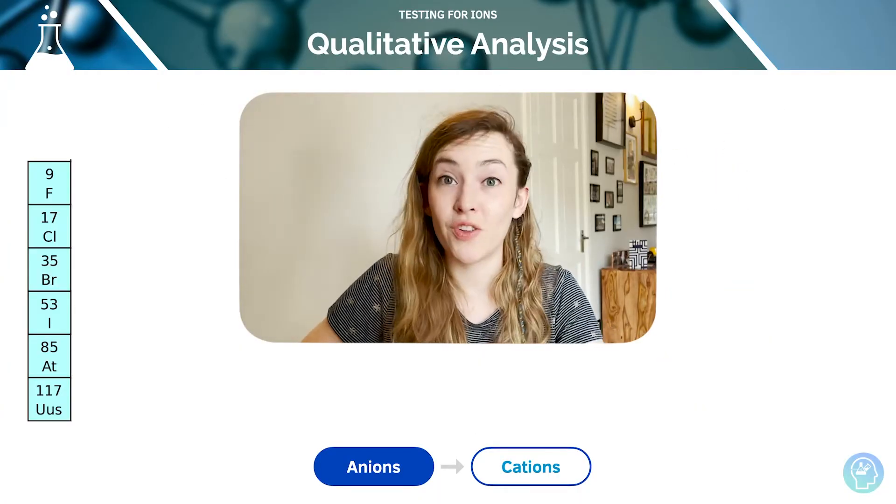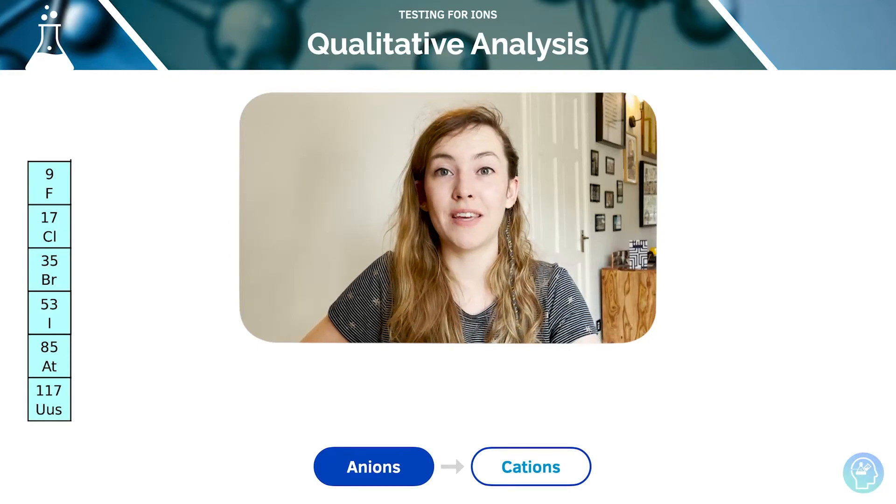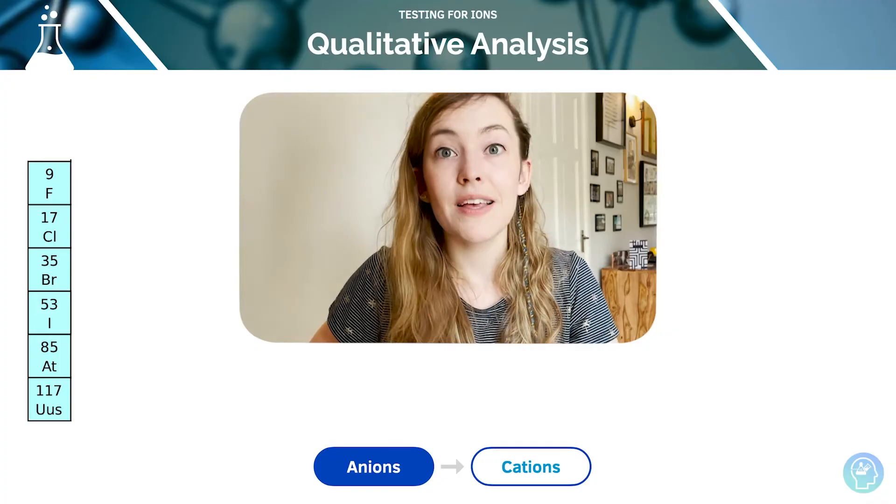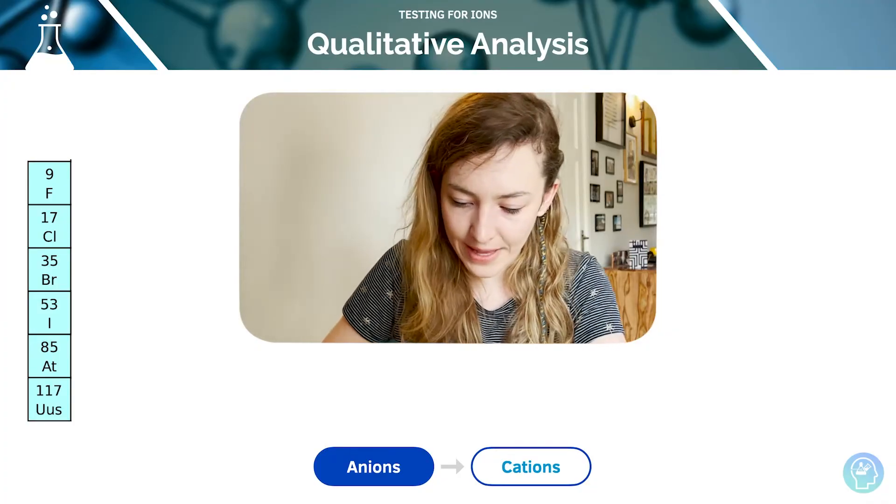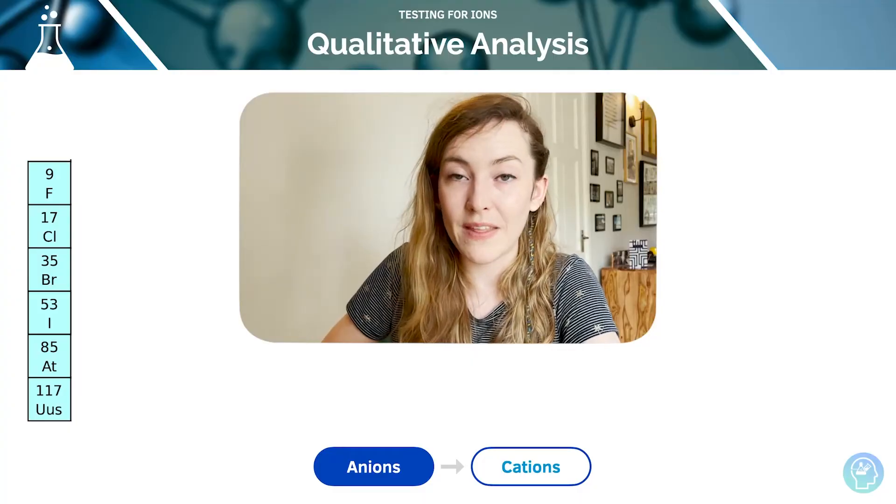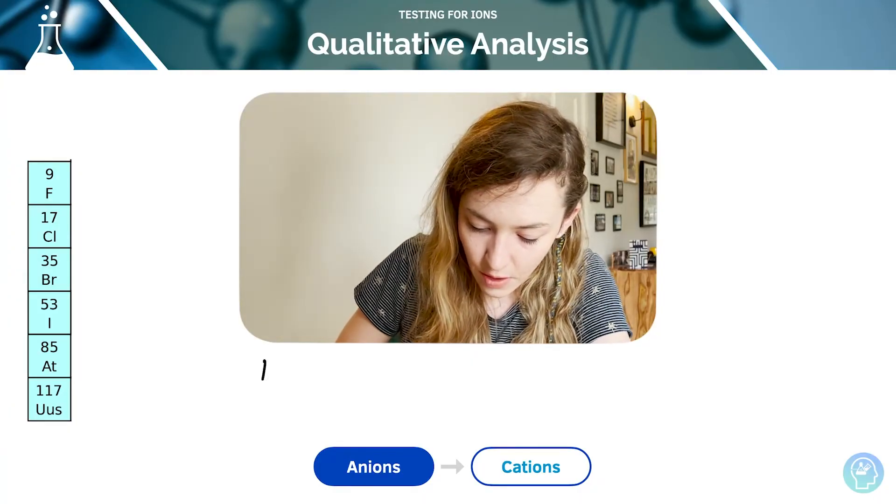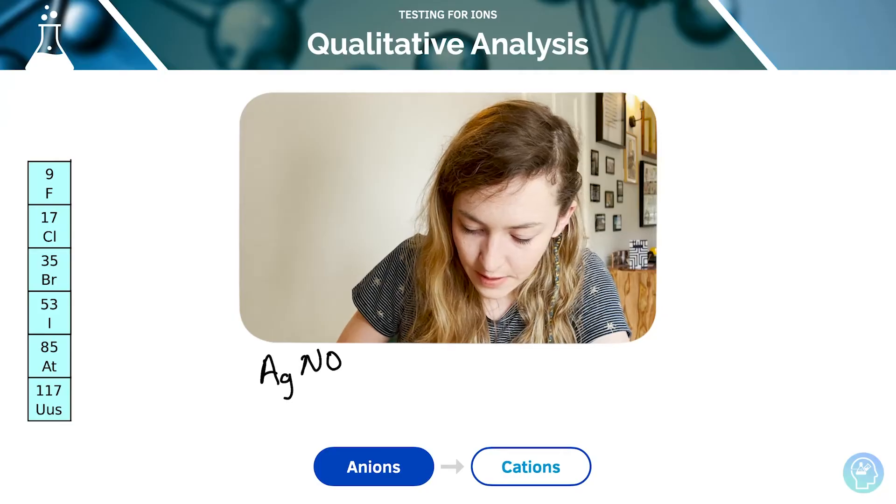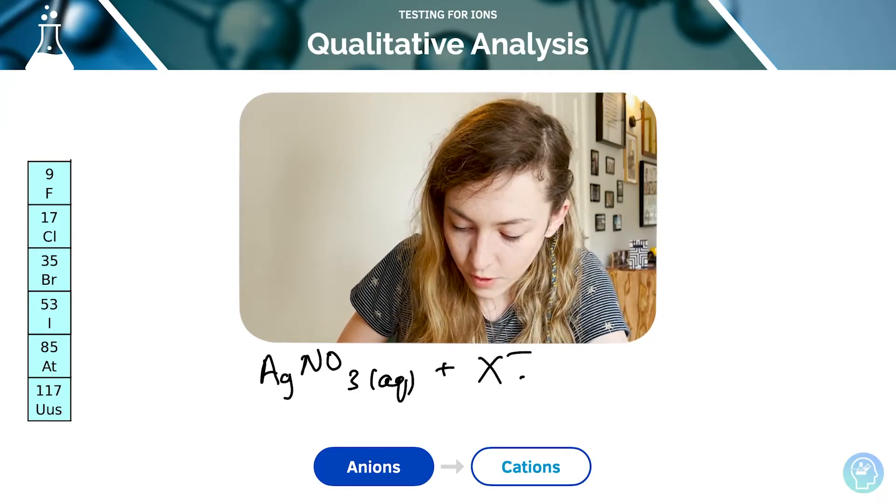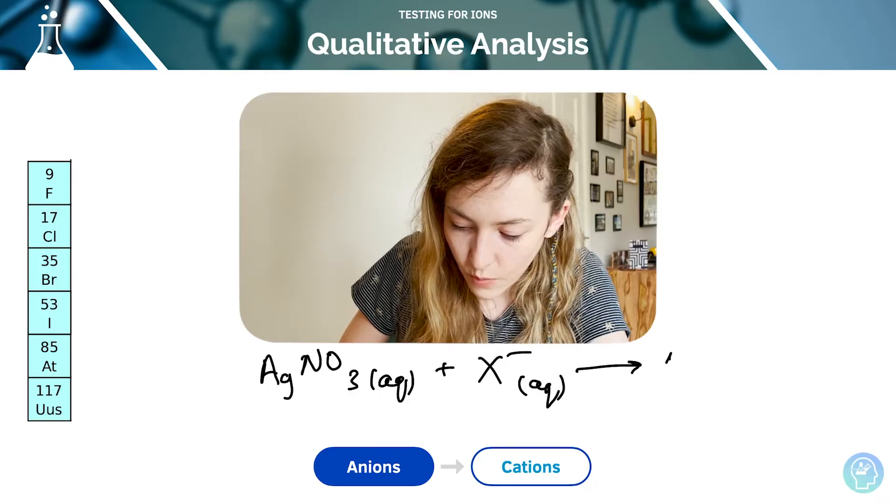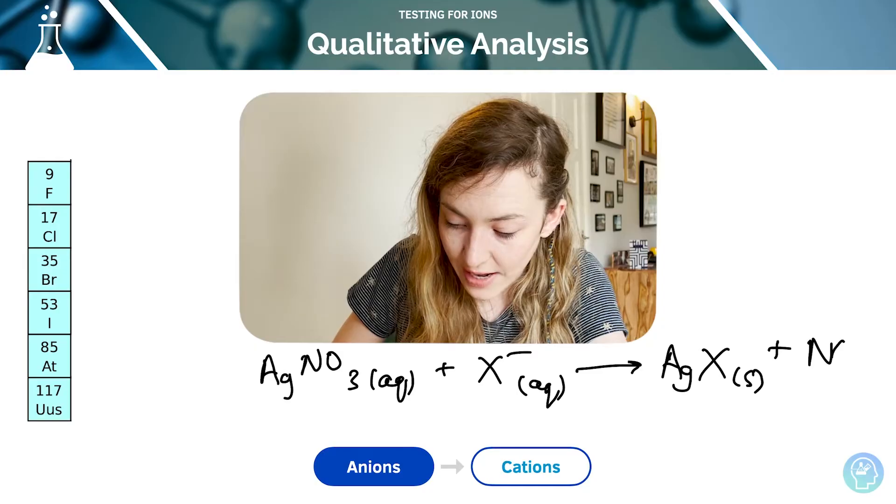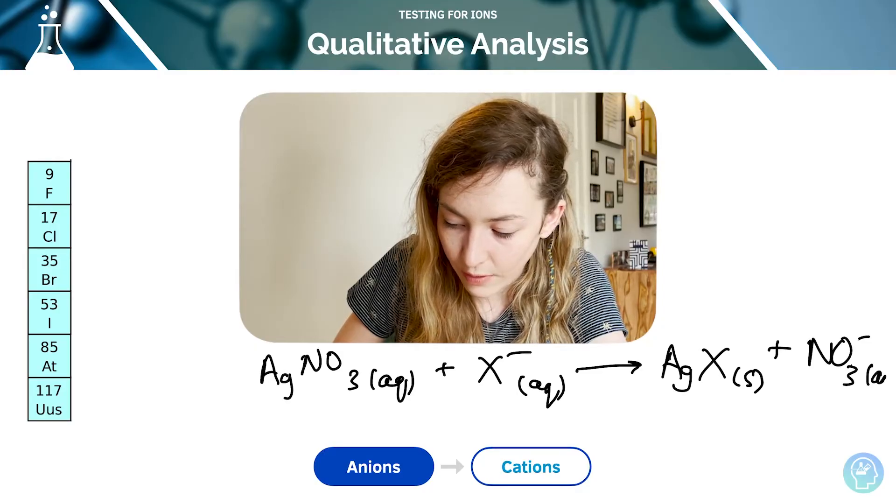In the previous tutorial, we mentioned this. Halide ions can be tested for by mixing the unknown compound with acidified silver nitrate. Again, we're going to get that displacement, and a silver halide is going to be formed, and there were the three colors that we would get. If we've got acidified silver nitrate, and we've got a halogen, I'm going to use X to represent that, we're going to get a silver halide, and that's going to be a solid precipitate. It's just going to leave my nitrate ion hanging around.